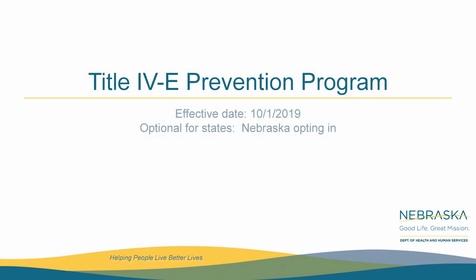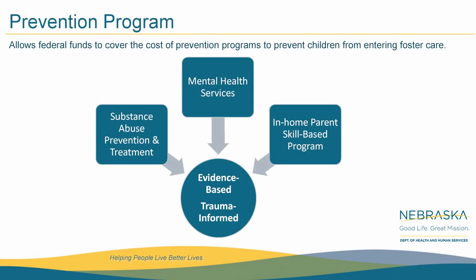The largest provision was the Title IV-E Prevention Program Plan. To draw down federal funds for services, the services must be evidence-based and trauma-informed. Data statewide and nationally found three consistent areas of need identified by the government for services in child welfare: substance abuse prevention and treatment, mental health services, and in-home parent skill-based programs. For a Title IV-E prevention program to be in place, part of the criteria is to identify who is eligible as a candidate for imminent risk of foster care entry.